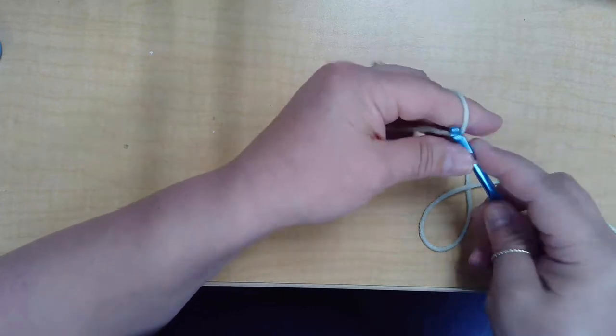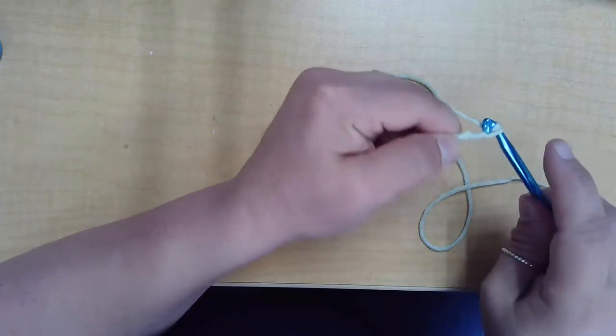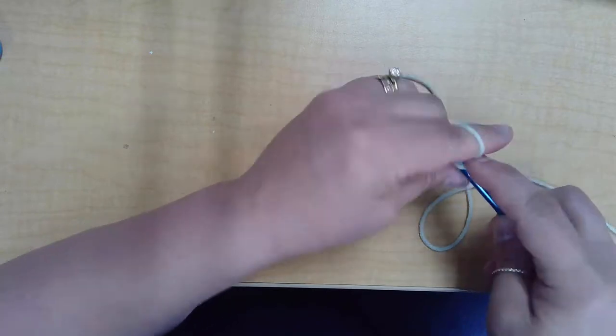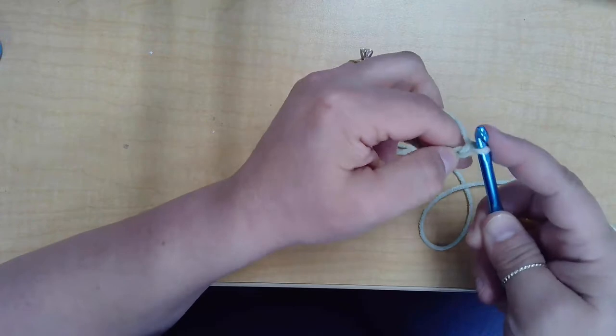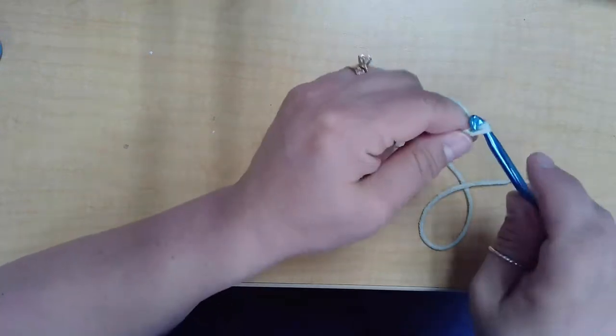So for a chain, you're going to yarn over your hook and pull through a loop like that. So we're going to make probably a 10 or 11 chains here.